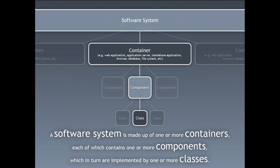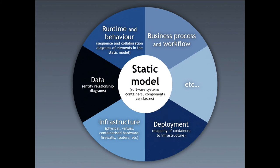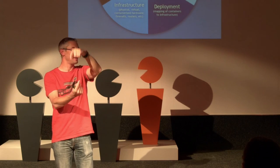For me, a software system is made up of a bunch of containers. A container is just an execution environment or something that stores data — web app, mobile app, database, file system. You zoom into a container and it has a bunch of components running inside it; and since I mostly work with Java, my components are made up of classes. It's just a really simple tree structure to describe the static structure of a software system. I'm trying to create a static model linking software architecture and coding as two sides of the same coin, from the system down to the code.